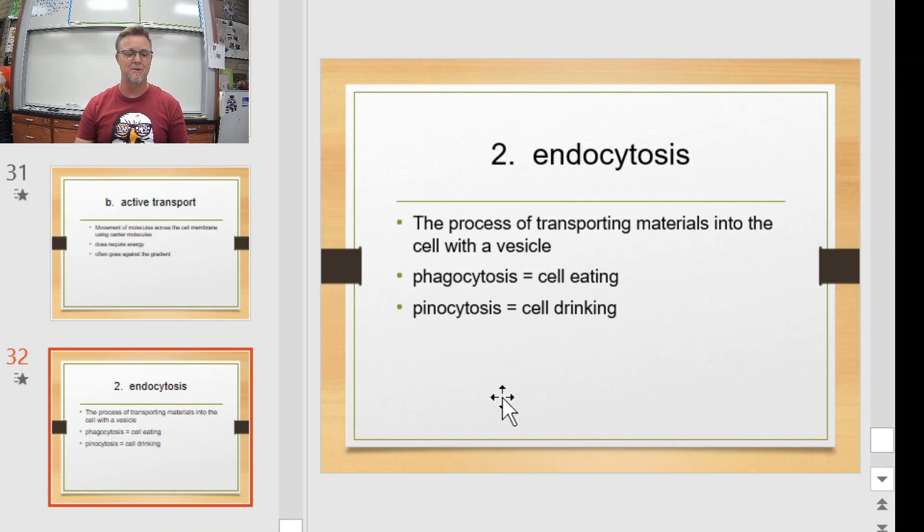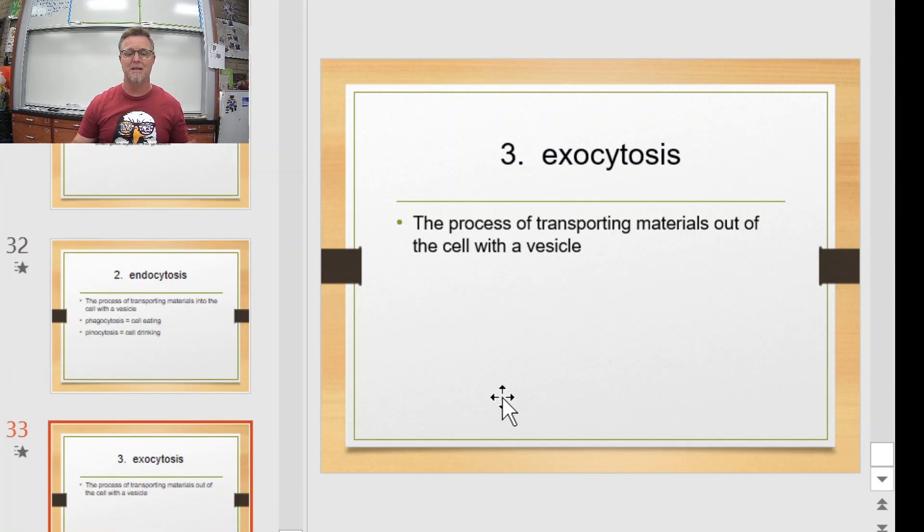All right, last two, endocytosis, exocytosis. So endocytosis is the process of transporting materials into the cell with a vesicle. There's two types, phagocytosis and pinocytosis. In phagocytosis, that's what cells do when they eat. In pinocytosis, that's what cells do when they drink. They engulf a matter of liquid into a vesicle, and they move that inside of the cell. Both of these require energy. Now, after all the digesting and drinking has been done, exocytosis will happen. That's the process of transporting materials out of the cell with that same vesicle.